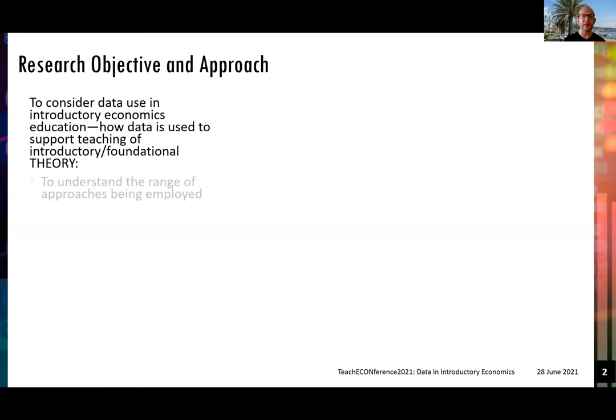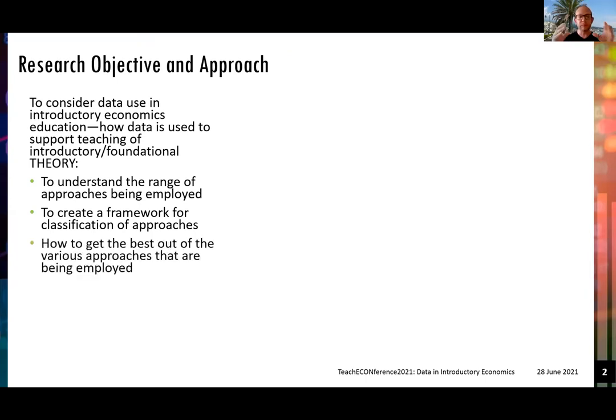What I really want to do is think about, in terms of surveying, the range of different approaches that academics take when incorporating data in the teaching of micro or just general introductory economic theory. Think about how we can take all these kind of, this grand variety of approaches that no doubt exist, and think about how can we classify these approaches. And having classified these, think about how can we get the best out of the various approaches that are being delivered by lecturers, because obviously everybody has subtle differences in their own approaches. I really want to identify the similarities between groups.